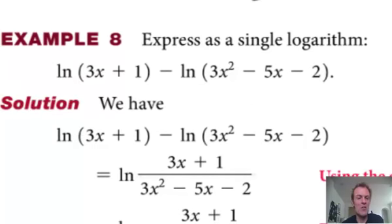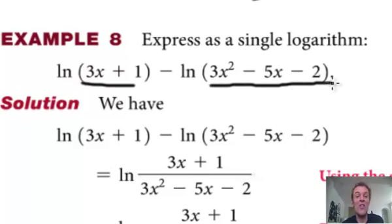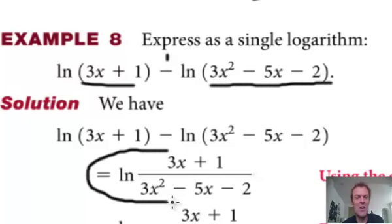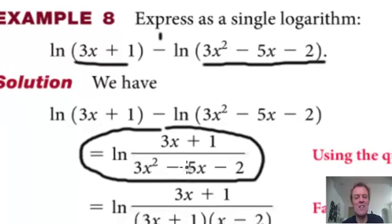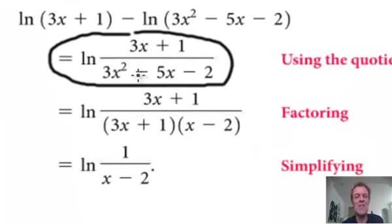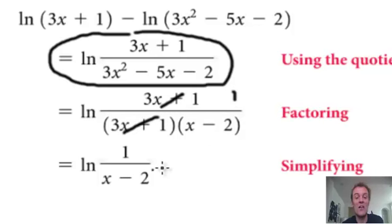This one is straightforward — ln of that one over that one, because it's a minus. And there it is. But the little sneaky thing on this is: if you factor 3x squared minus 5x minus 2, you get 3x plus 1. These will cancel. So it's just 1 over x minus 2.